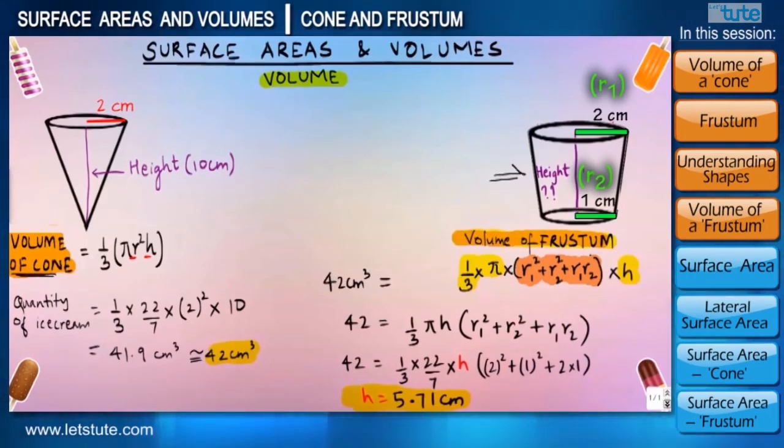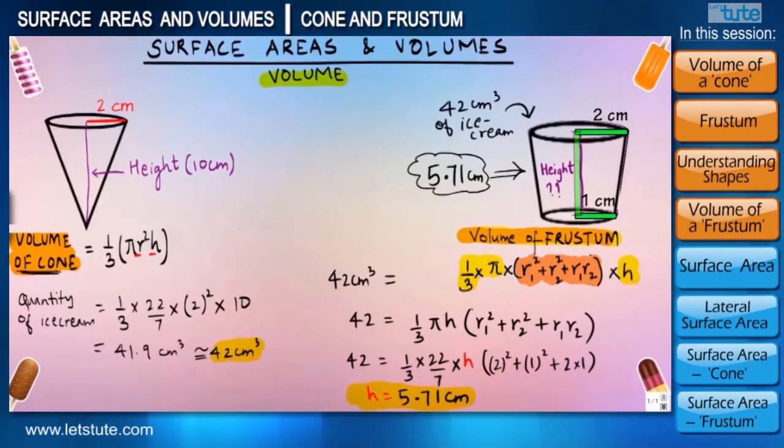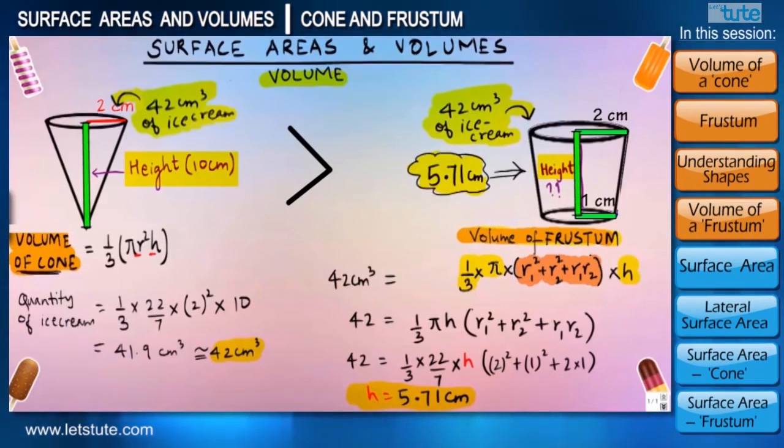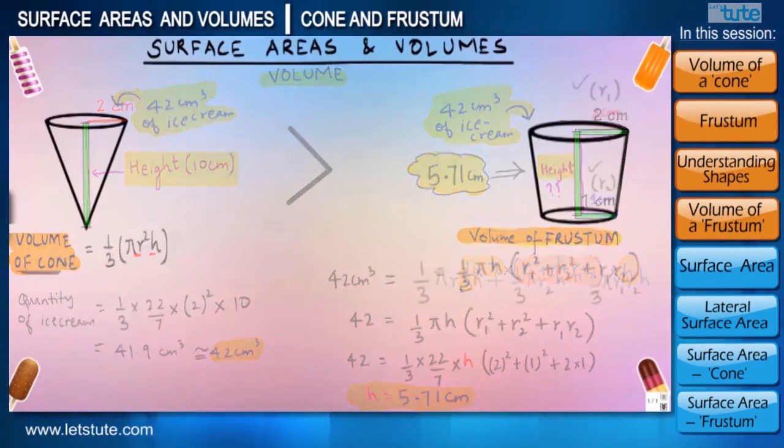In order to match the volume of the cone, the parameters of the cup should be height 5.71 centimeters, upper and lower radii 2 centimeter and 1 centimeter respectively. Now did you notice something over here? Even when the height of the cup is less than that of the cone, they contain same quantity of ice cream. We often tend to think that cone contains more ice cream, so that's the kind of strategy that is often used by certain companies to increase their ice cream sales.